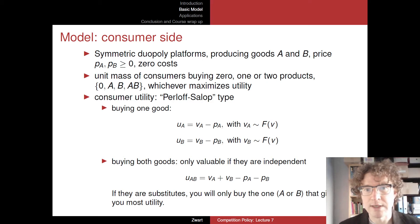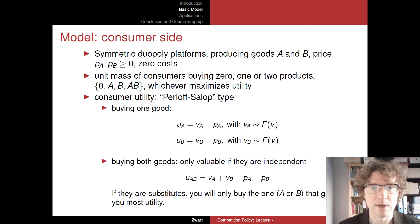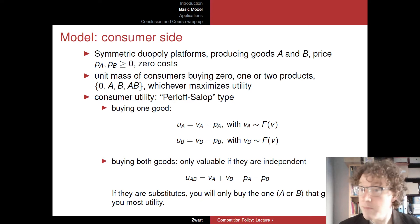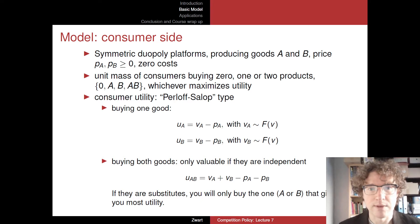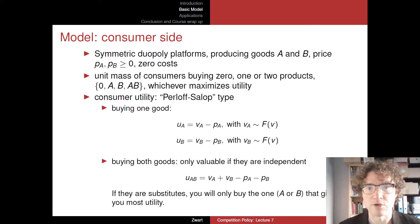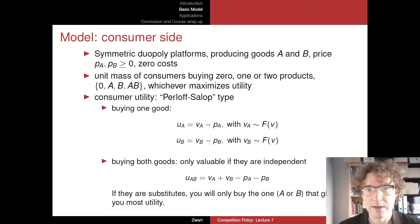What consumers can do is buy none of these goods, buy one good — either good A or good B — or, if they'd like to, buy both A and B. They will do whichever maximizes their utility given the prices PA and PB that they observe.